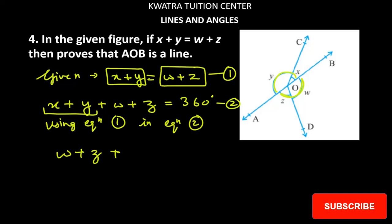So I can write x plus y as w plus z. And w plus z as it is, it equals 360. w plus w is 2w and z plus z is 2z. Now what you can do is you can take 2 common from the left hand side.